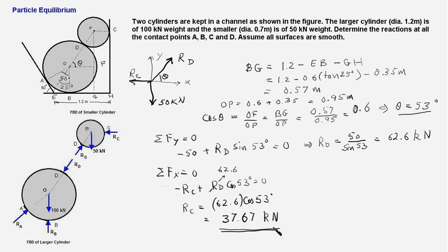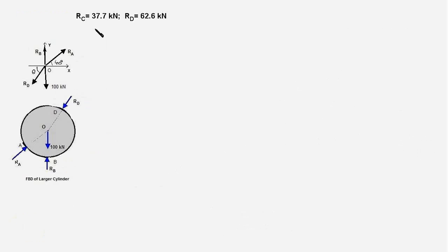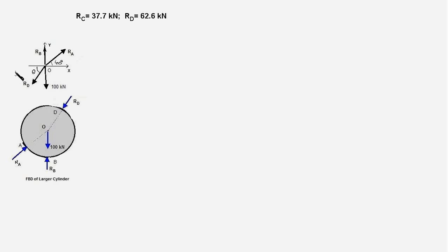So we now know the reaction forces at points C and D. Now let us turn our attention to the larger cylinder to find the remaining two reaction forces RA and RB. We have copied the values of RC and RD from the previous step. We already made the FBD of the larger cylinder, and now at the point of concurrency O we show all the forces. RD makes an angle of theta = 53 degrees with the X axis.